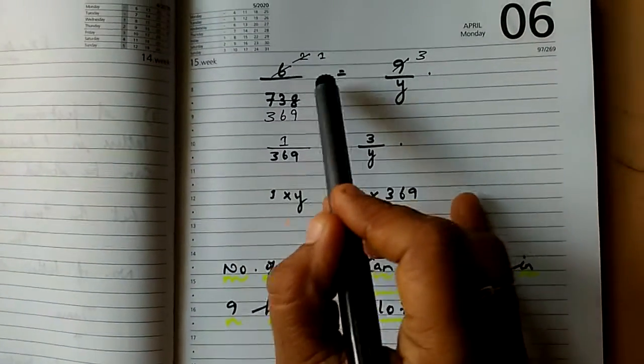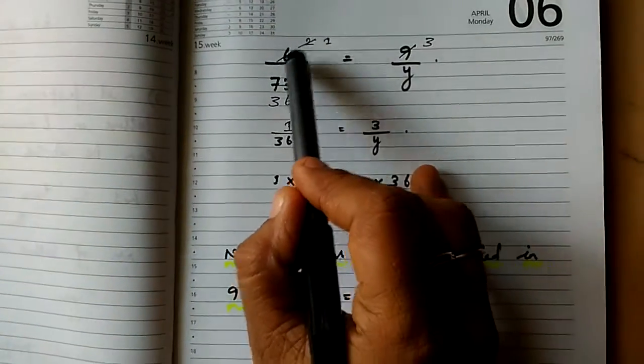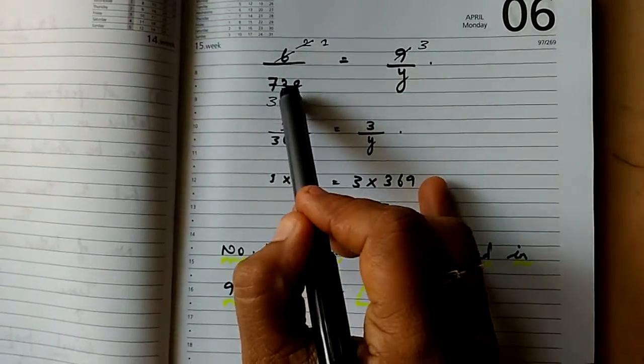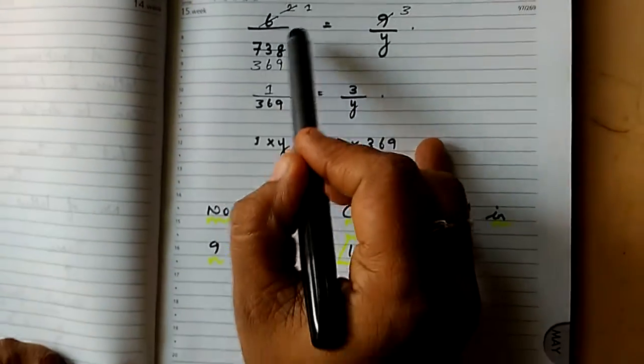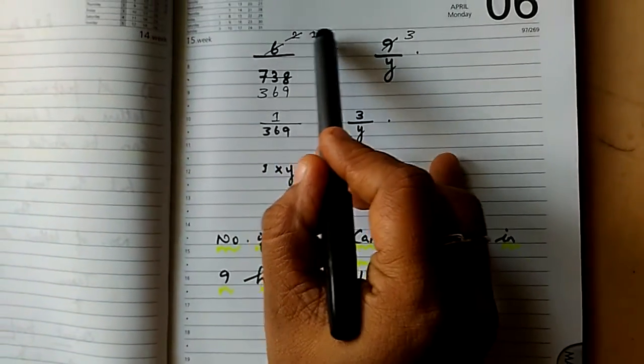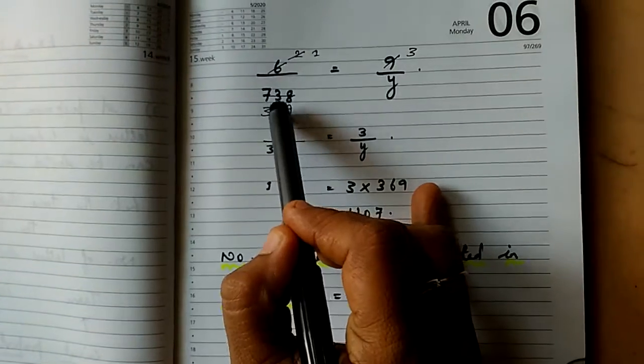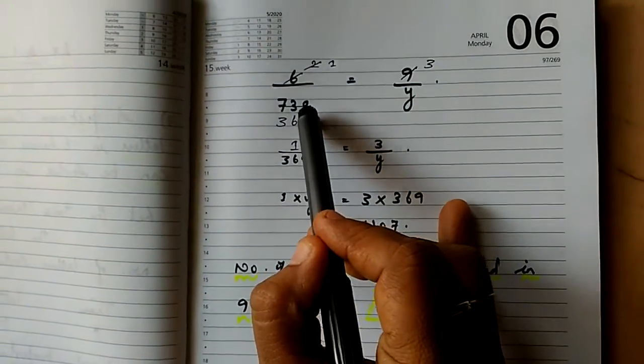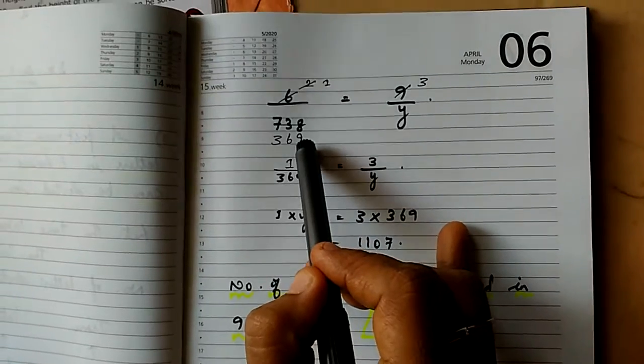First, 6 and 9 I crossed out in the three table: 2 threes are 6, 3 threes are 9. Again, this 2 under 738 should be cut out by the two table. 2 ones are 2, 3 twos are 6, balance 1 becomes 13, 6 twos are 12, balance becomes 8, 18. So 18 in the two table becomes 9. The remaining terms: 1 by 369 equal to 3 by y.